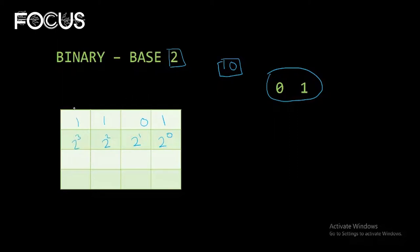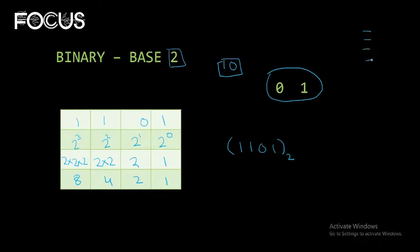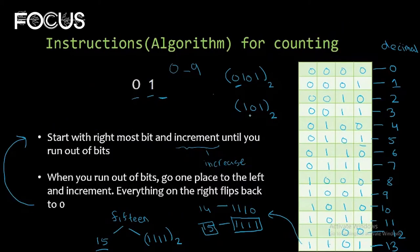These correspond to units, tens, hundreds, and thousands — but with a factor of 2. Anything raised to the power 0 is 1. 2 to the power 1 is 2. 2 to the power 2 is 2 multiplied by 2. And 2 to the power 3 is 2 multiplied by 2 multiplied by 2. Using this, the number 1 should use 4 bits. We can see: 1, 1, 0, 1 — and its decimal number is 13. So 1101 in binary is 13 in decimal.